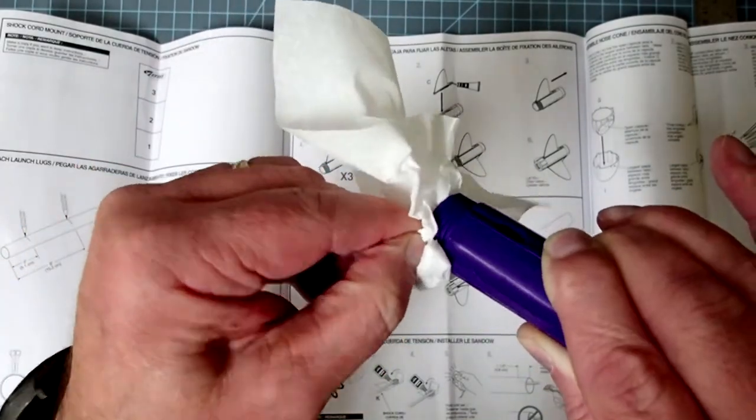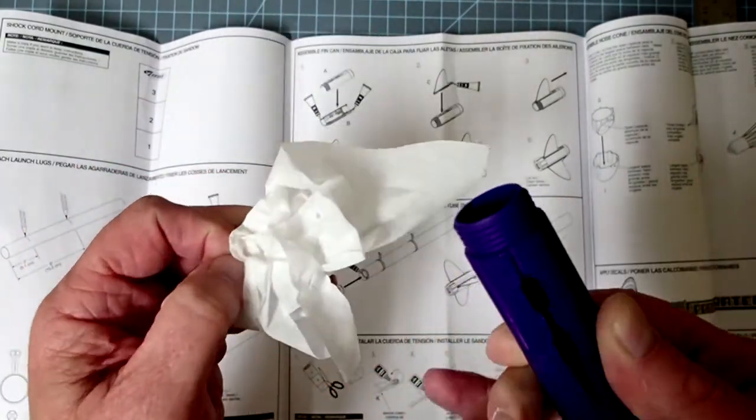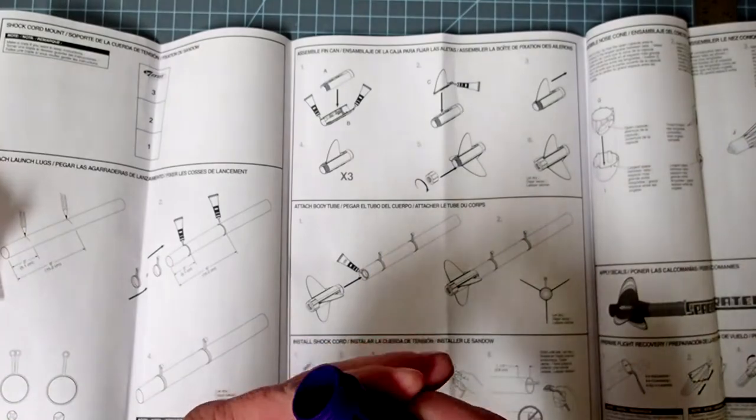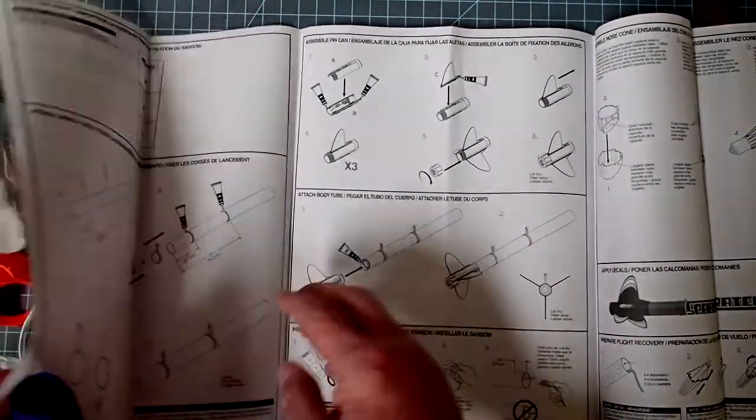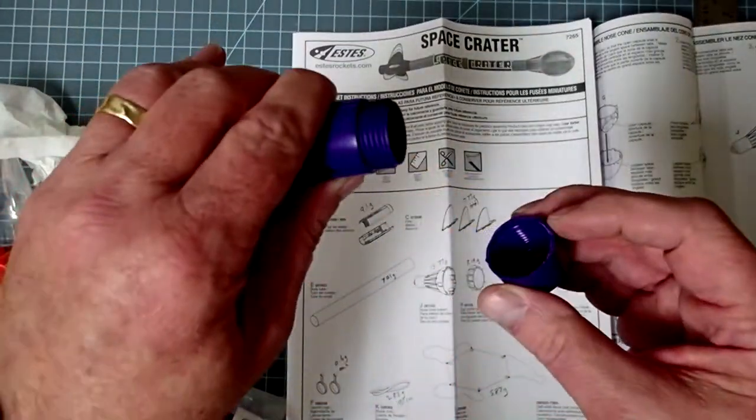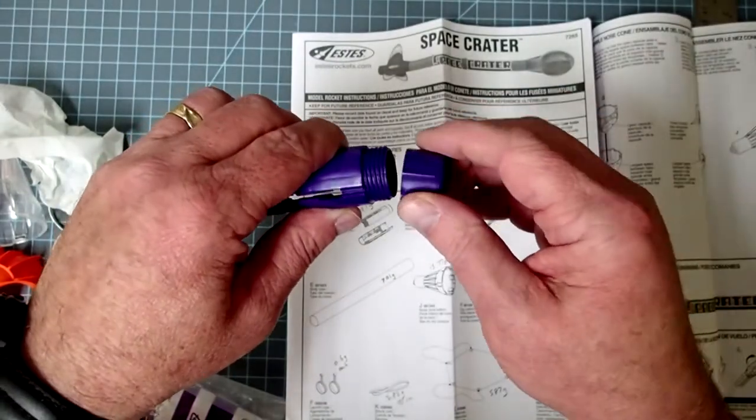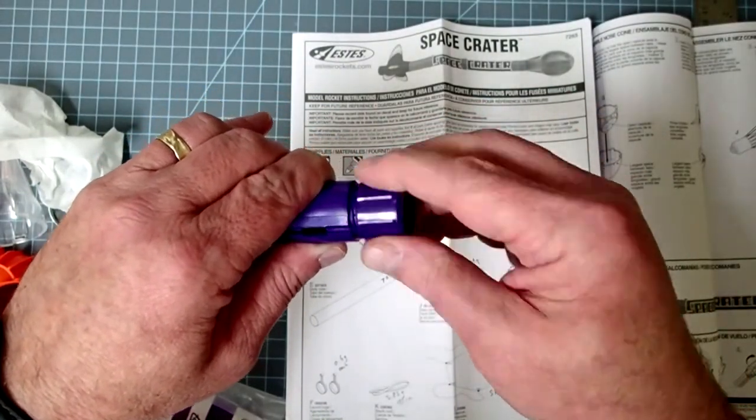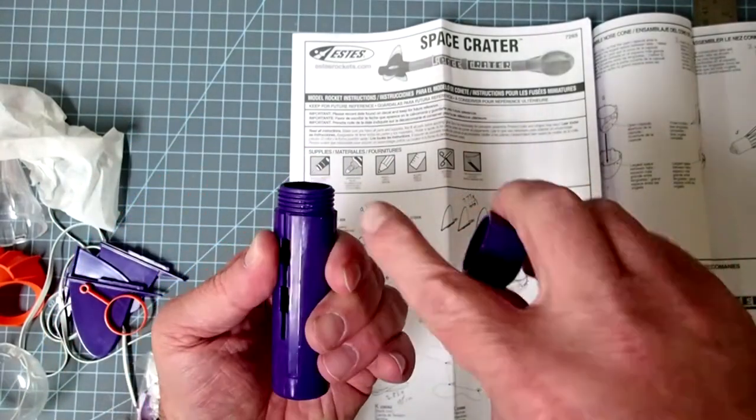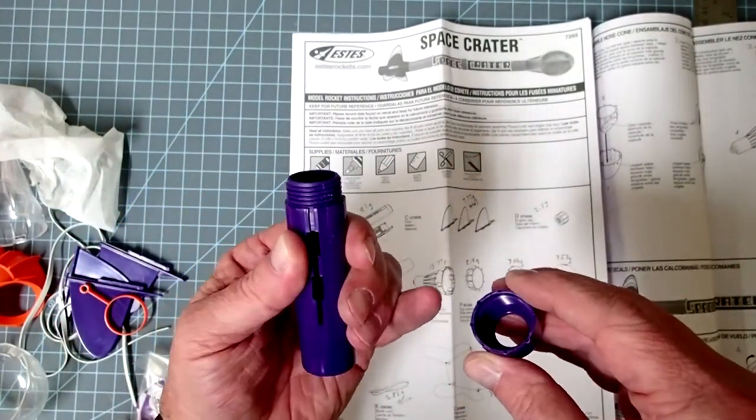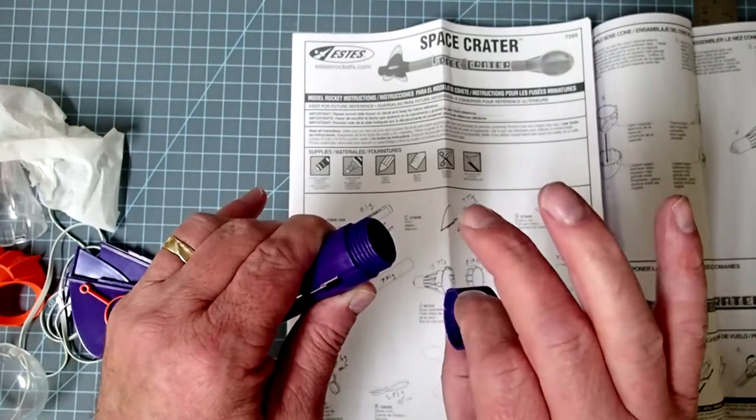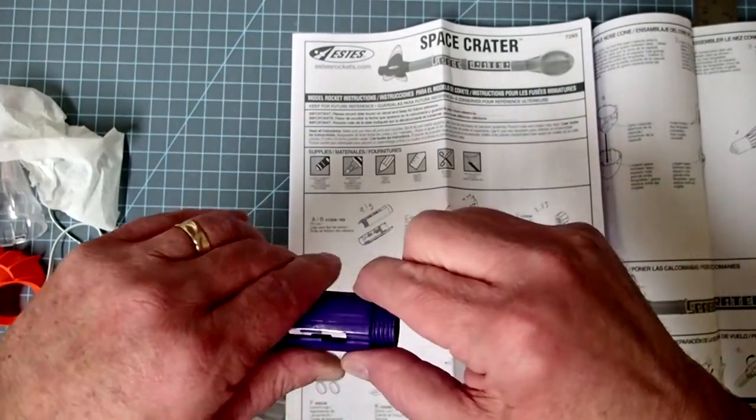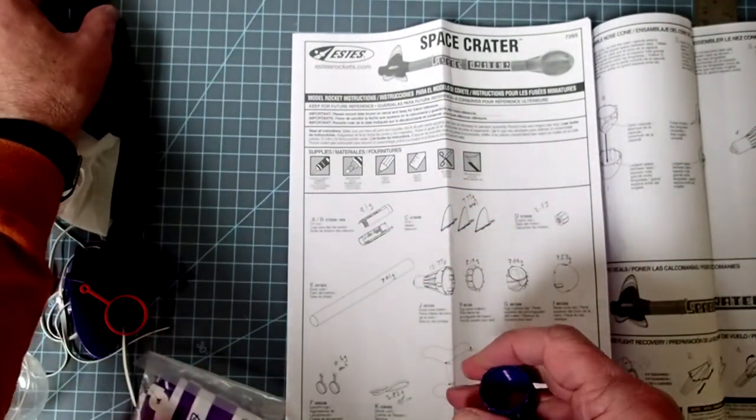Because if we have too much excess glue there, it will interfere with the engine retainer cap, which is right here. And I'm going to do this really quickly. I'm going to put this on and then take that off. And what that's done is knock down any glue that was up too high in there. All right, but I'm going to leave this off while it's drying. So, I'm going to set that aside.